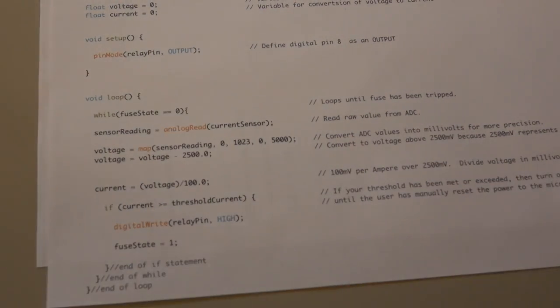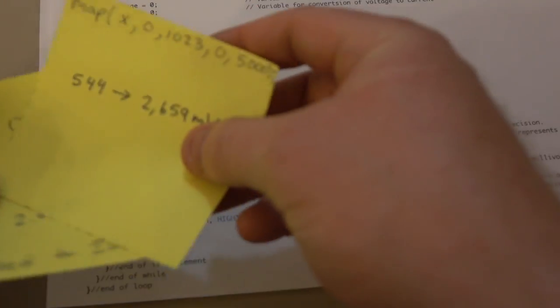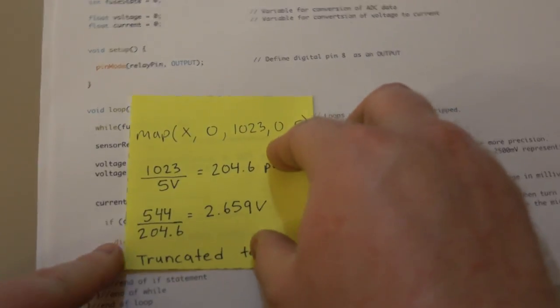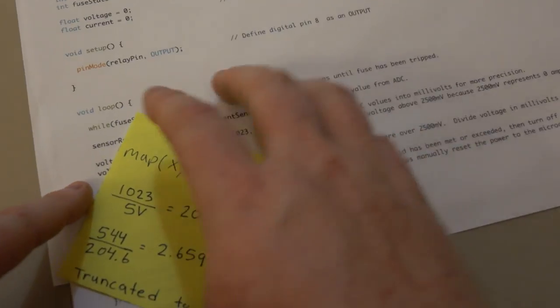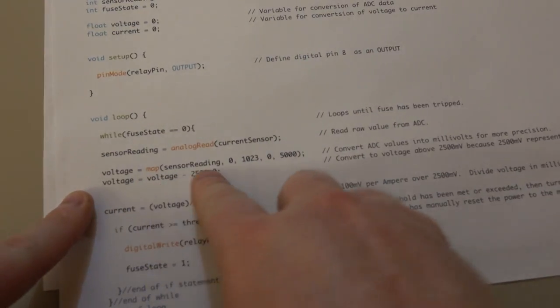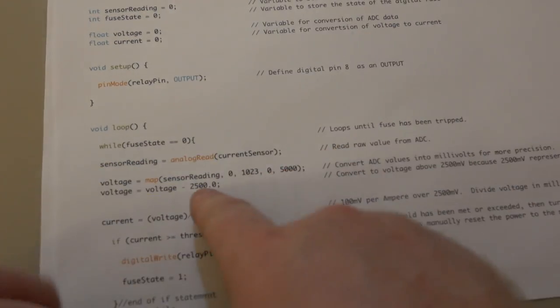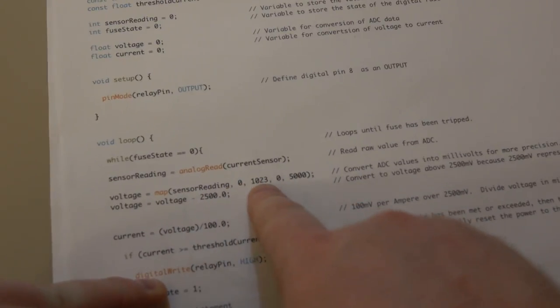So yeah, it's a really simple program. But let's say you did do the 0 to 5 for the map function, like I showed you here. And you're mapping that 0 to 1023.